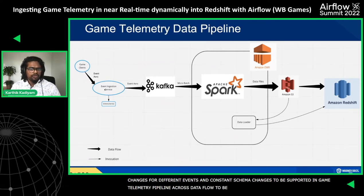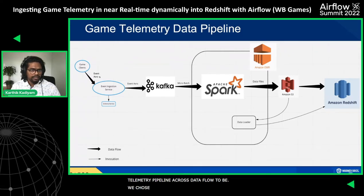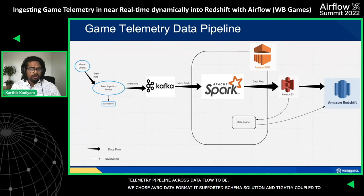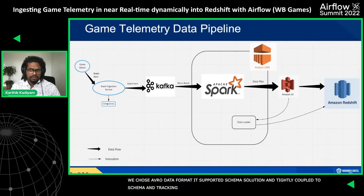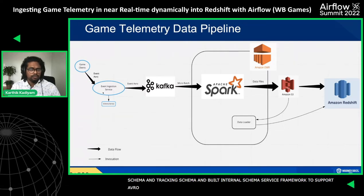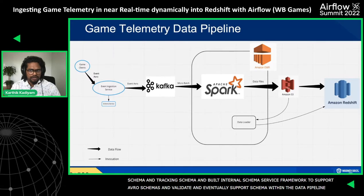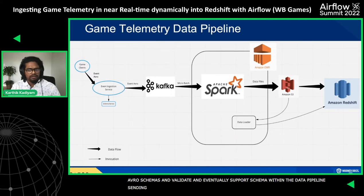We need to support evolving schema and constant schema changes on game events. We chose Avro because it supports schema evolution, is tightly coupled to the schema, and has a fingerprint to track the schema. On top of that, we built an internal schema service framework to support and validate Avro schemas and support schema evolution within the data pipeline. The event ingestion service acts as a producer to Kafka and sends events to Kafka in real time.